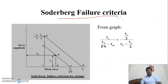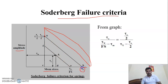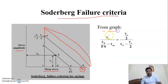Soderberg failure criteria — I have already discussed the Soderberg criteria with you in class. This is the stress amplitude versus mean stress diagram. If we include the Goodman criteria, it will appear differently on the diagram. For spring design, we use the Soderberg criteria, meaning we work at the yield stress. When factor of safety is included, the Soderberg line shifts to a new position.